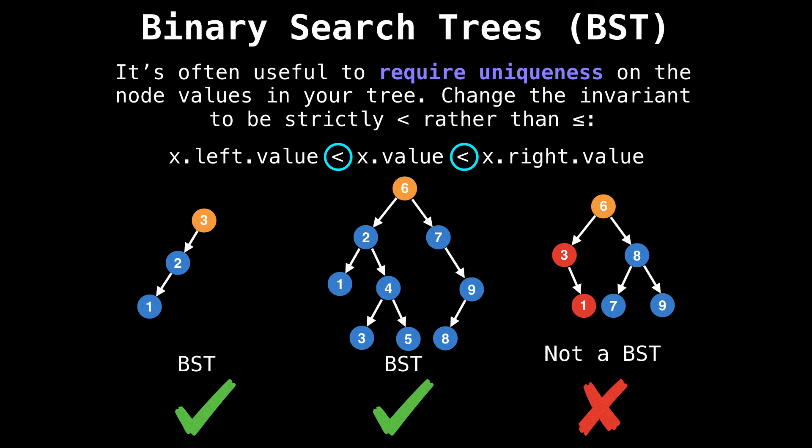It's often useful to require uniqueness on the values of your binary search tree so that you don't end up with duplicate values in your tree. To resolve this issue of duplicate values, you can change the invariant to be strictly less than rather than less than or equal to.